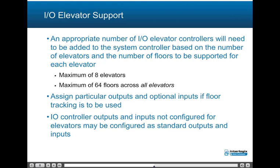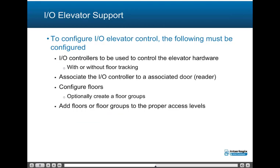For relay input-based IO elevator support, an appropriate number of IO elevator controllers will need to be added to the system controller based on the number of elevators and floors to be supported. The system supports a maximum of 8 elevators and a maximum of 64 floors across all elevators. Next, assign particular outputs and optionally inputs if floor tracking is to be used — floor tracking will report as part of the event what floor was accessed by a particular credential. IO controller outputs and inputs not configured for elevators may be configured as standard outputs and inputs. To configure IO elevator control, configure IO controllers to be used to control the elevator hardware with or without floor tracking, then associate the IO controller to the associated door and reader, configure floors, optionally create floor groups, and then add floors or floor groups to the proper access levels.